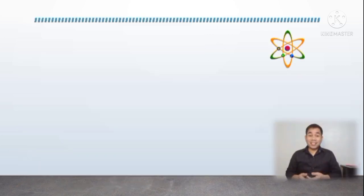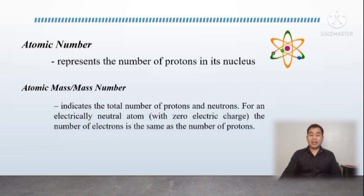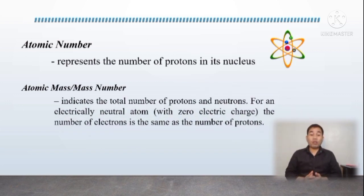Let's also discuss how atomic number and mass number is related to the number of subatomic particles. Let's start with atomic number. Atomic number represents the number of protons in its nucleus. The atomic mass, or mass number, indicates the total number of protons and neutrons. For an electrically neutral atom with zero electric charge, the number of electrons is the same as the number of protons.